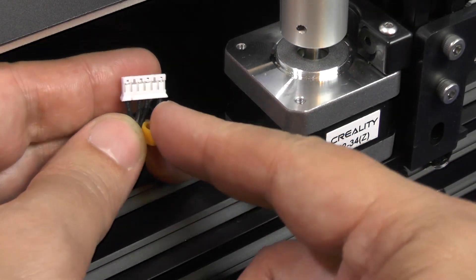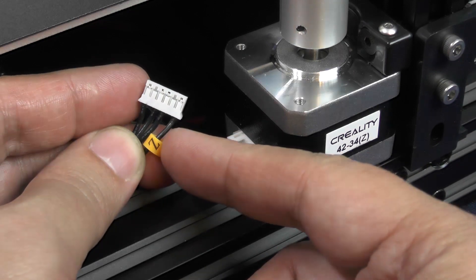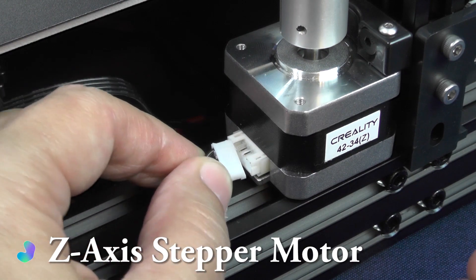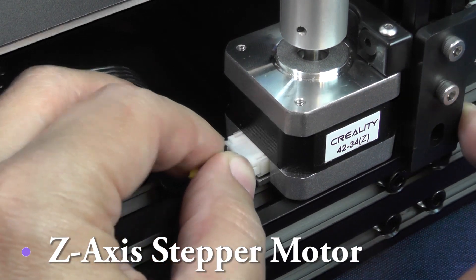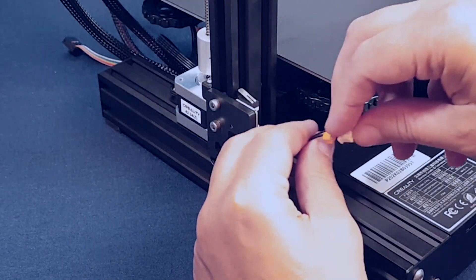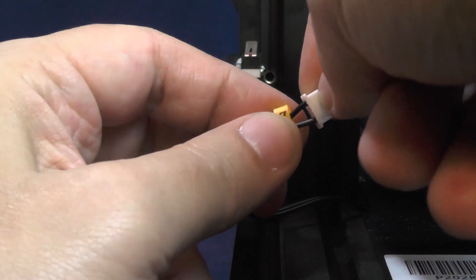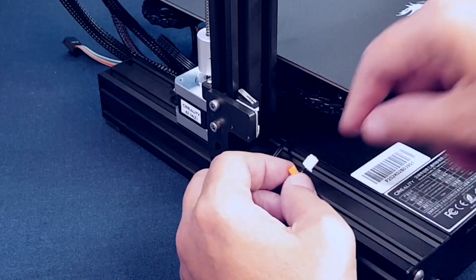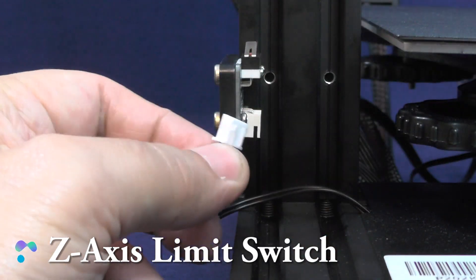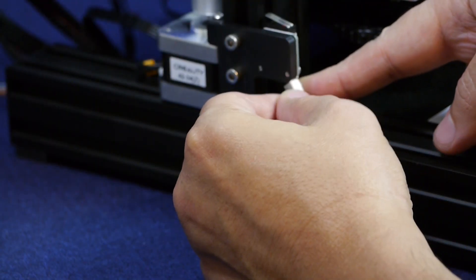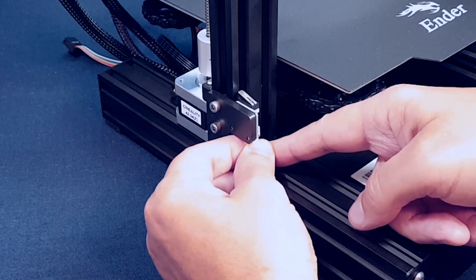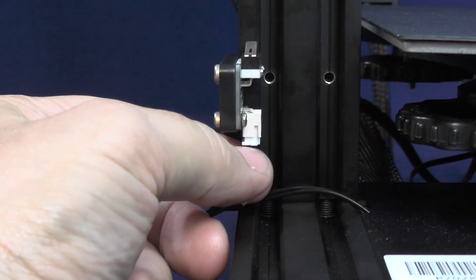Pick up this other larger connector with the letter Z and plug it to the Z-axis stepper motor. Pick up this smaller connector here, also featuring the letter Z, and plug it to the Z-axis limit switch.